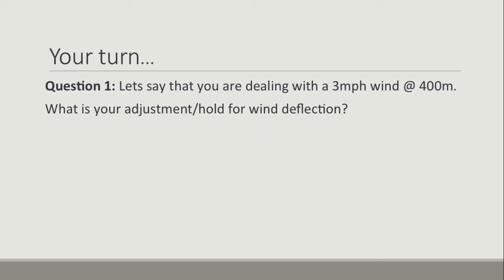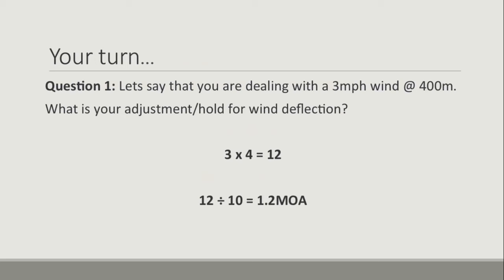Now it's your turn — the next three questions are for you to have a crack at the formula yourselves. In this question you're dealing with a 3 mile an hour wind at 400 meters. What is your adjustment or hold for wind deflection? Pause the video, work it out, then unpause and check your answer. Here's the answer: 3 multiplied by 4 — our constant for 400 meters — equals 12. 12 divided by our wind constant of 10 gives us 1.2 minutes of angle.